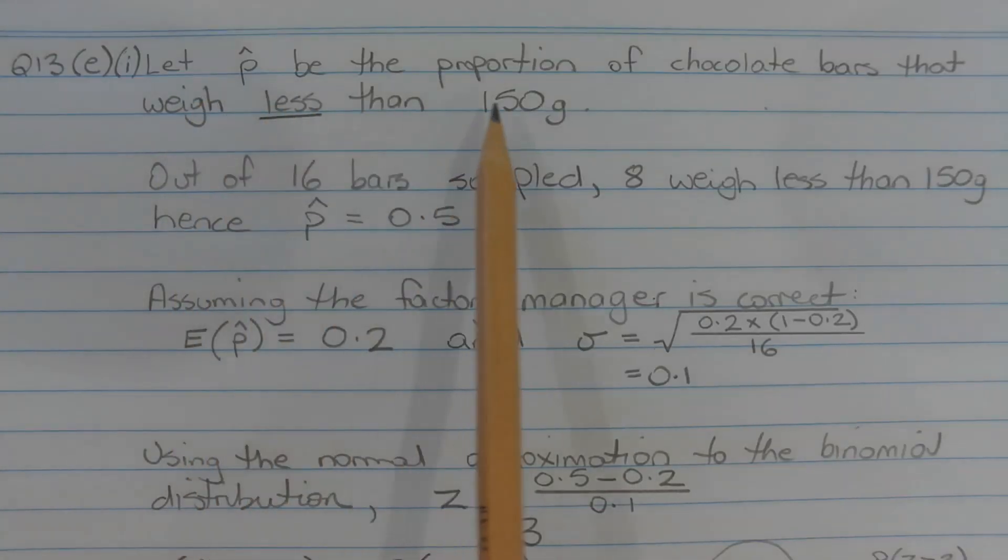Let P hat be the proportion of chocolate bars that weigh less than 150 grams. Out of 16 bars sampled, 8 weigh less than 150 grams, hence P hat equals 0.5.